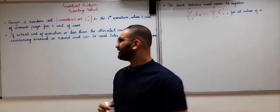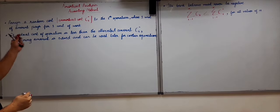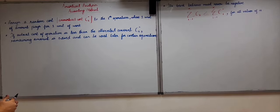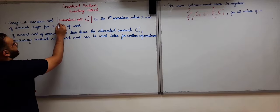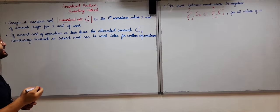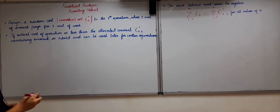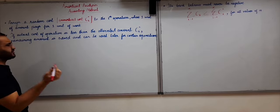So what does the accounting method actually talk about? First of all, it says to assign a random cost to the i-th operation, where one unit of amount pays for one unit of work. In this case, our random cost will be the amortized cost, that is ci-cap. When we talk about operations, it is better if we consider some kind of data structure.